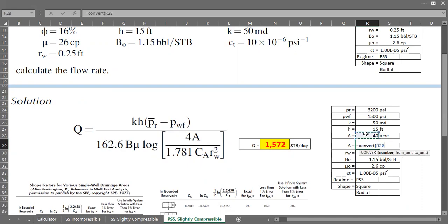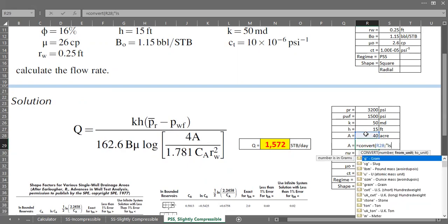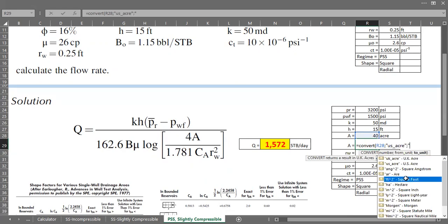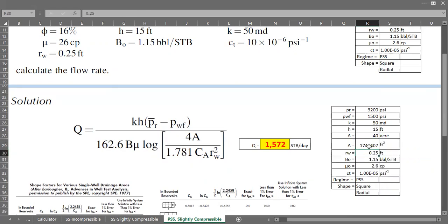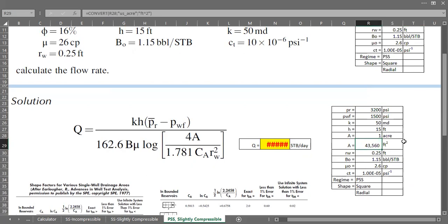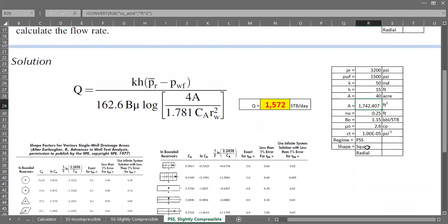So I will first convert this 40 acres into square foot. So convert 40, change it to square foot. Okay, so this one, one acre is 43,560 square foot.